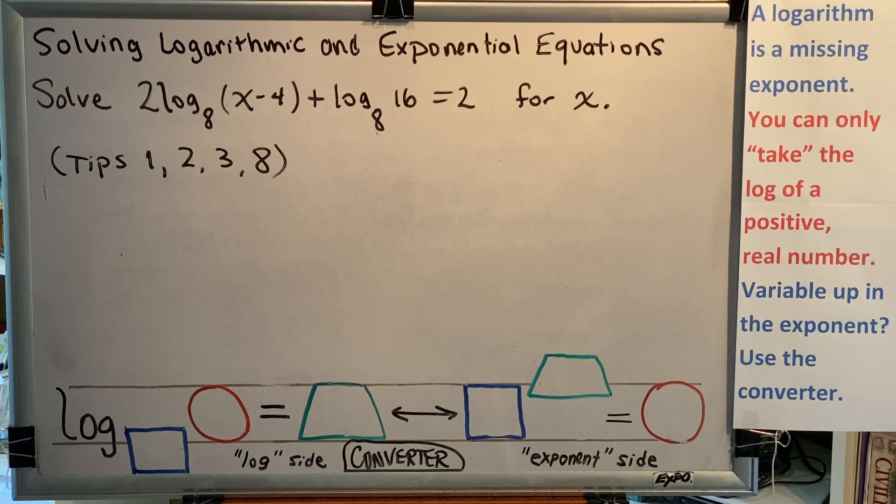Tip 3 says when logs of the same base are being added or subtracted, combine them using rule 6 or rule 7. In this problem, we can see we have two logs with the same base that are being added. Of course, we'll have to get rid of the 2 in front of the first log before we can use rule 6 to combine them together.